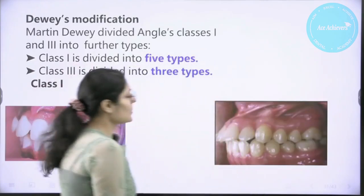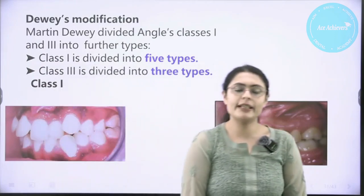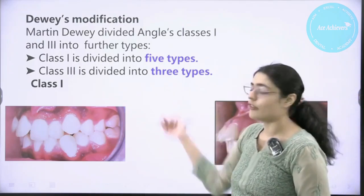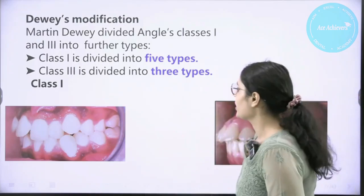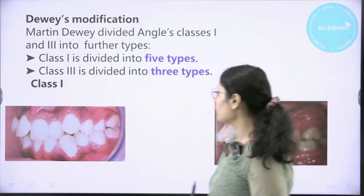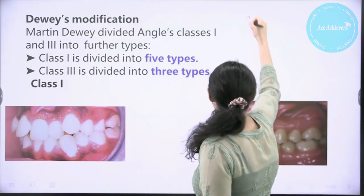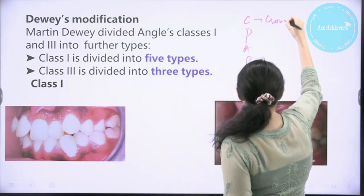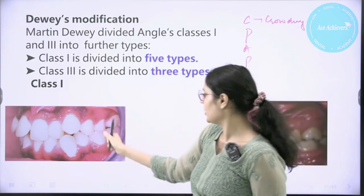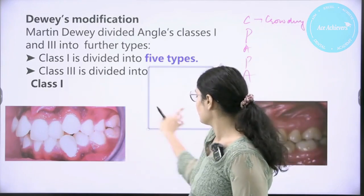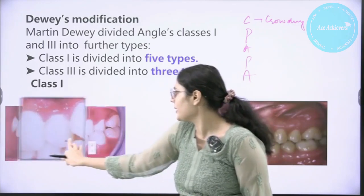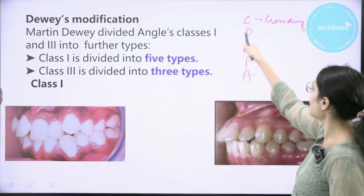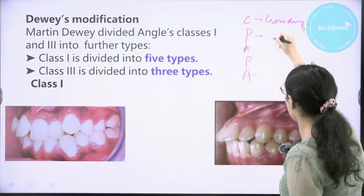Then there was another scientist called Dewey, who modified Angle's classification further. He grouped Class 1 into five types and Class 3 into three types. Let's study them using a mnemonic: C-PAPA. 'C' stands for crowding — the patient has a Class 1 molar relation with anterior crowding. This is Angle's Class 1 Type 1.